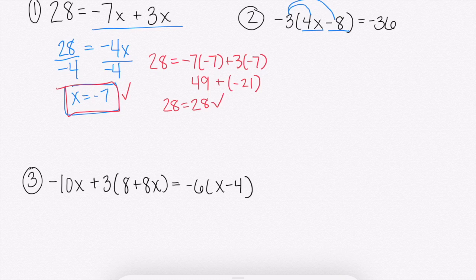So anyways, I'm going to multiply that negative 3 onto 4x to get negative 12x, and then negative 3 times negative 8 to get a positive 24. Now that I have distributed, it's just a two-step equation.